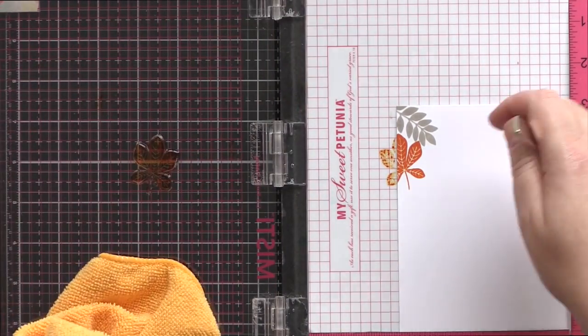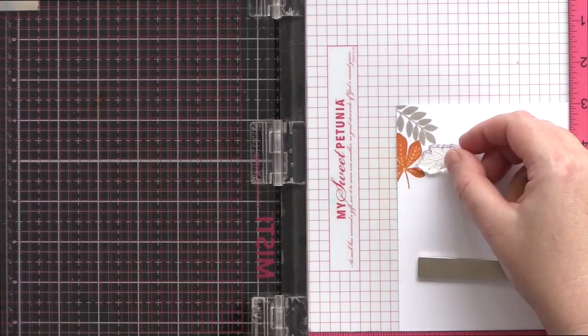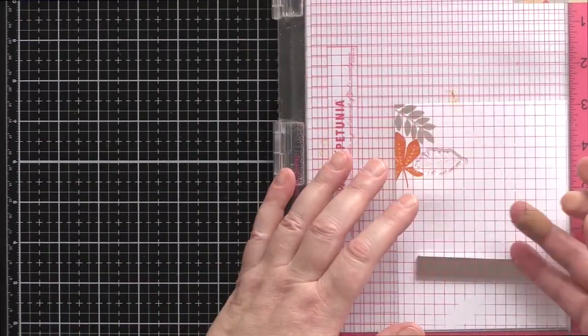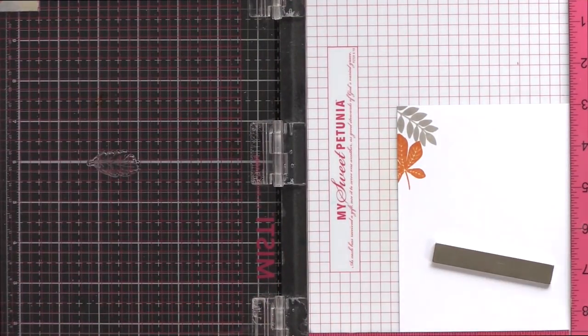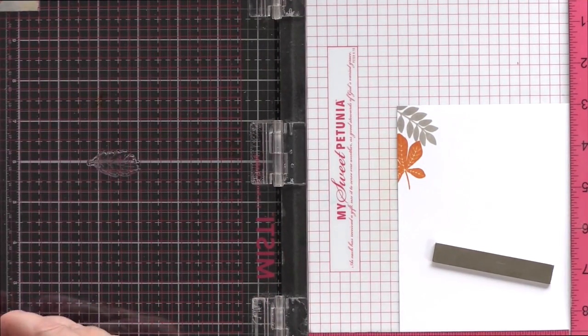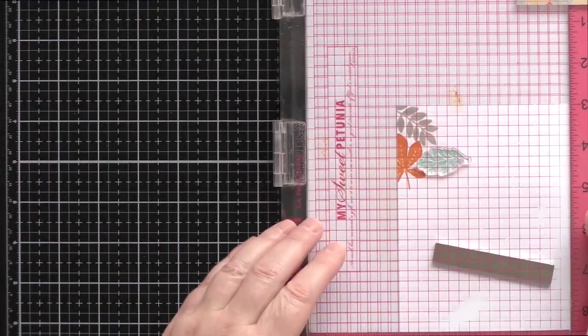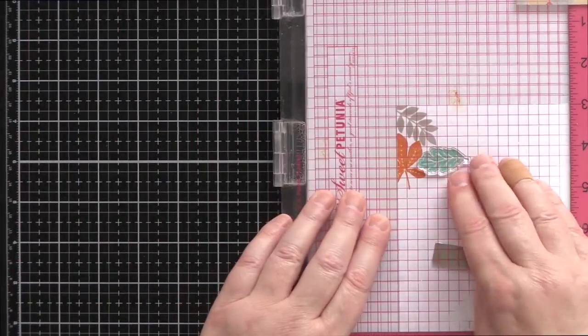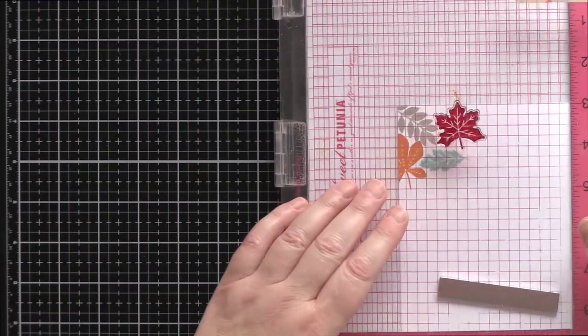So I've placed a piece of Neenah Solar White card in the MISTI and starting in the top left corner of the card I'm choosing a leaf shape and stamping it in one of the dye inks I've chosen. Depending on the coverage after stamping once, sometimes I chose to repeat and stamp a second time to get a good solid impression.